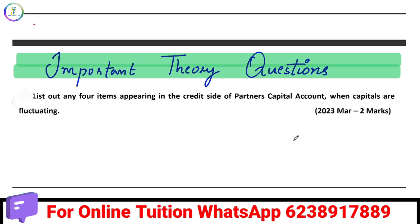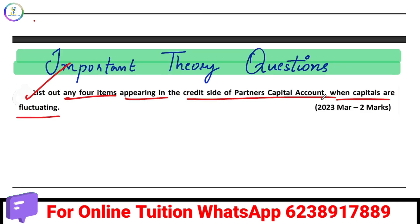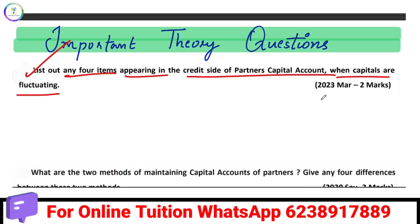The first question is to list out any four items appearing in the credit side of the partner's capital account when capitals are fluctuating. In the credit side of the partner's capital account, we have the opening balance.